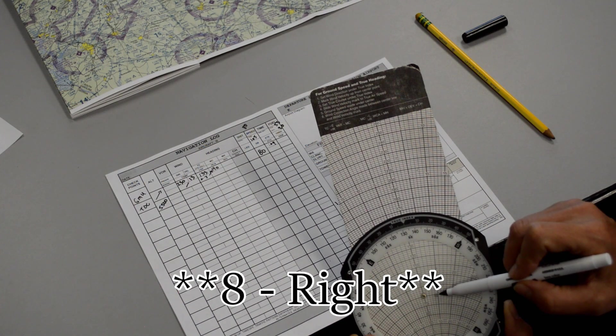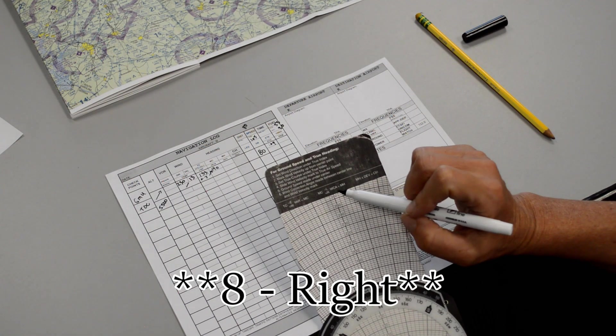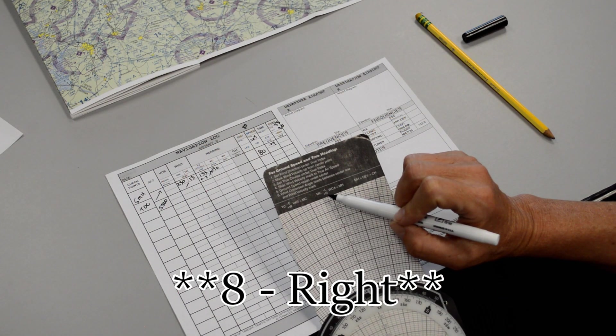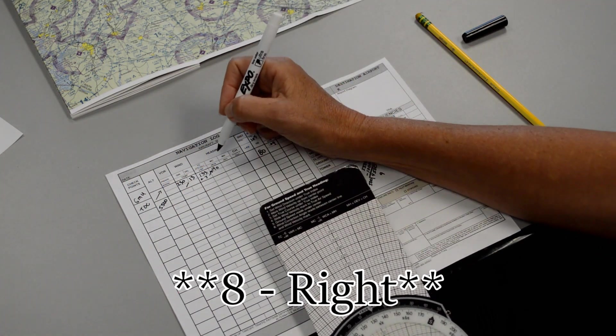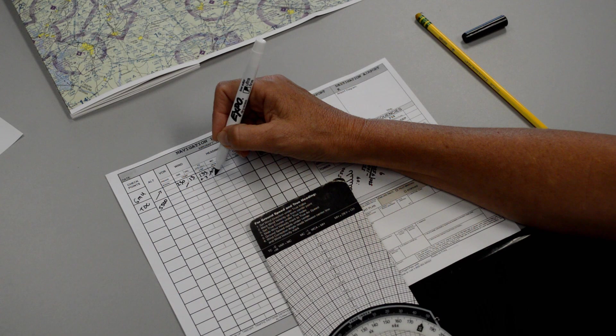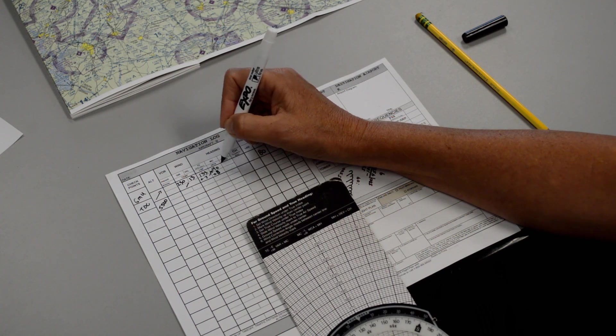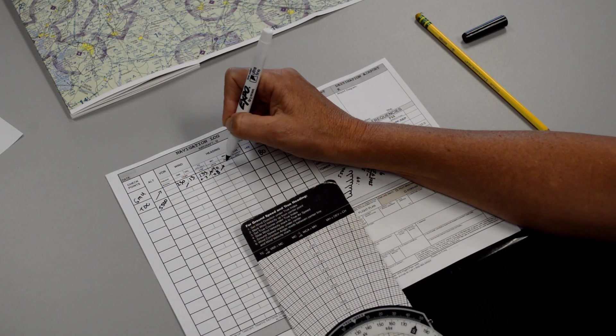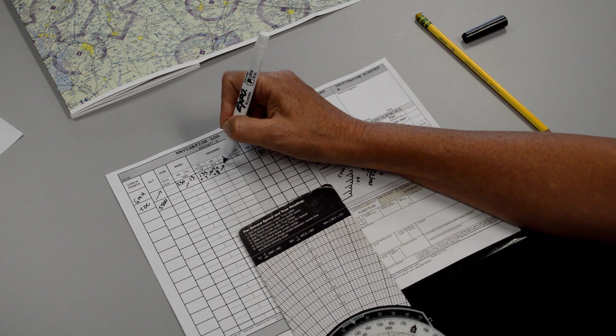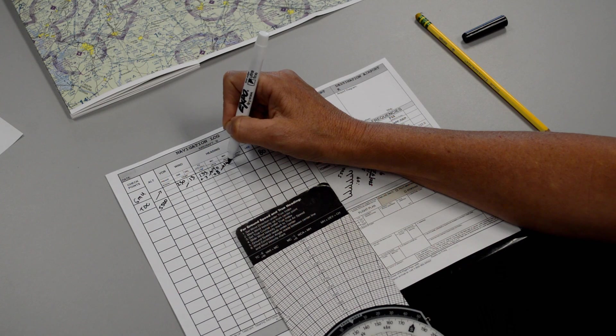What do I do with 9 right? I look up here at their little formula and it tells me that I should add it if it's to the right. So up here, my wind correction angle should be plus 8. And then my new answer, which is my magnetic heading, goes right here. So my magnetic heading will be 148.